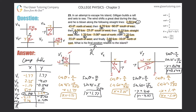Now add up all the x-components: negative 1.77 plus 2.35 plus negative 1.18 plus 5.10 plus 0.148 minus 4.13 plus 2.76. The total sum of x-components comes out to positive 3.28 kilometers.